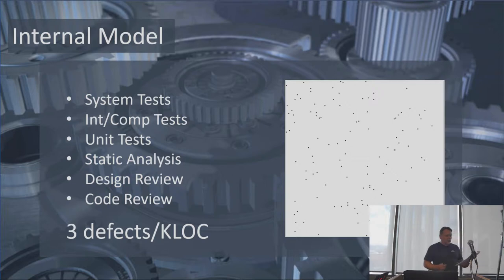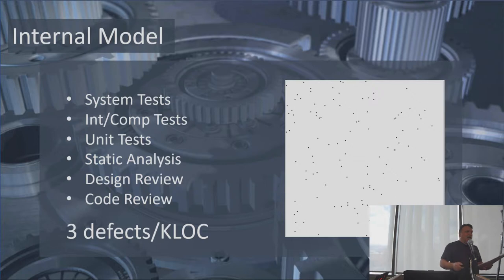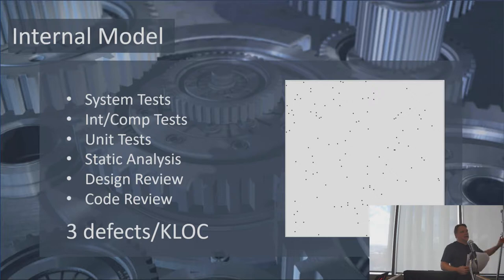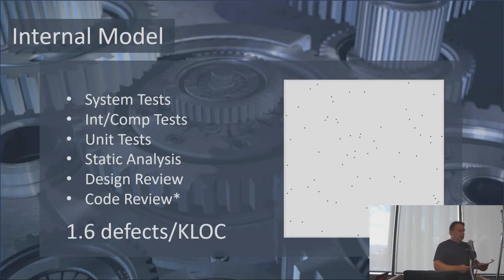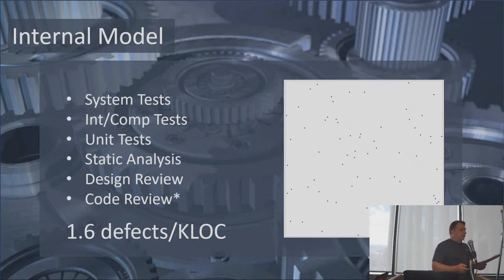A study done at Cisco by a company called SmartBear looked at code reviews and how to optimize them. According to their research, they identified best practices that bring code review effectiveness up to the same level as formal code inspections — and even though it's about one fifth of the work, you get the same benefit. Taking this into account, in this reference model we can get defect density down below 1.6, approaching some better quality levels.